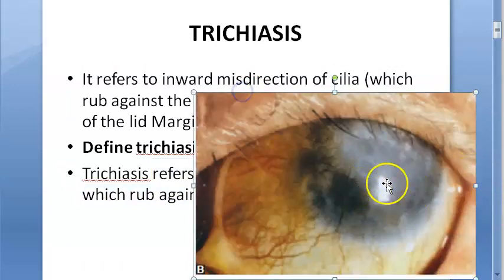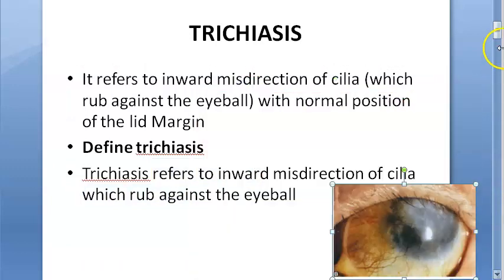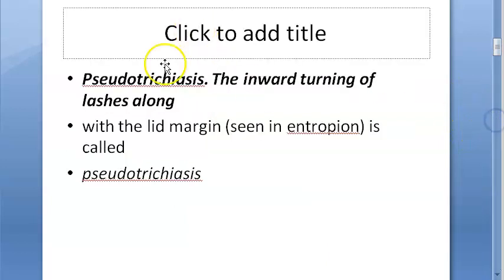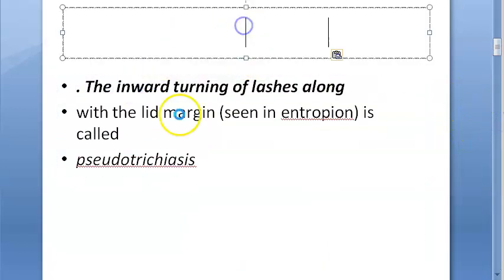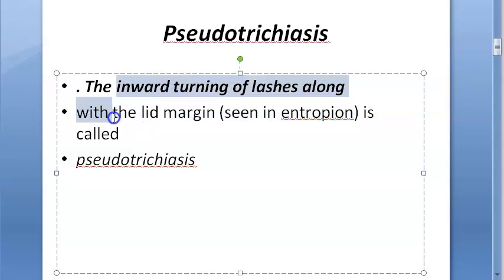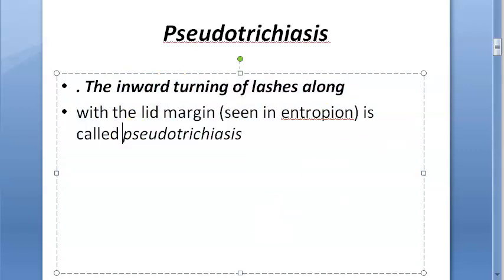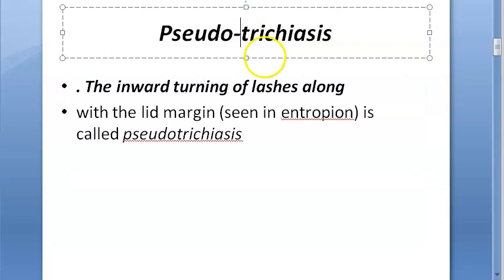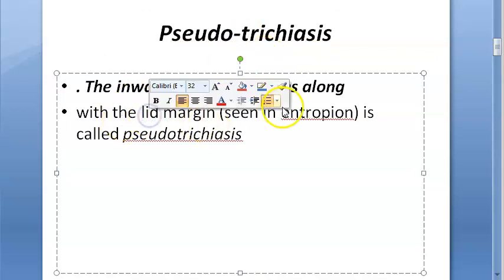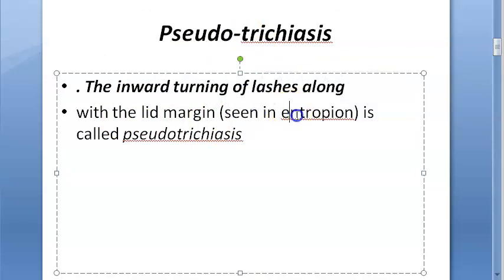Now let's move on to pseudo-trichiasis. Pseudo-trichiasis is the inward turning of the lashes along with the lid margin — that is, entropion. The lashes did not turn inside on their own; rather, the lid margin itself turned inside, bringing the lashes with it. So pseudo-trichiasis is essentially entropion where the lashes are also touching the eyeball.